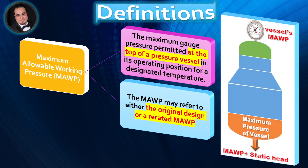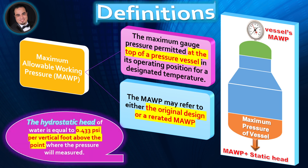As illustrated in the figure, maximum allowable working pressure is the maximum gauge pressure permitted at the top of a pressure vessel. The maximum pressure of the vessel is equal to the maximum allowable working pressure plus static head. Please note that the hydrostatic head of water is equal to 0.433 PSI per vertical foot above the point where the pressure is measured.